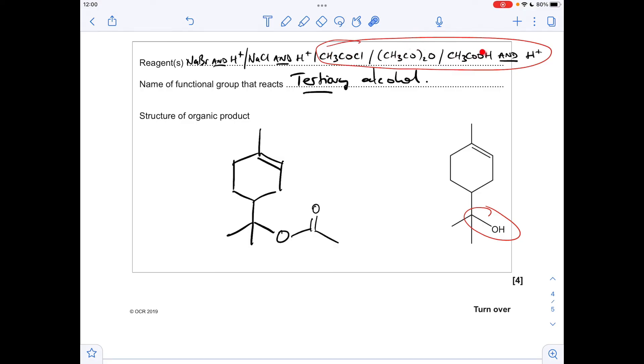Tertiary alcohols will also react with acyl chlorides, acid anhydrides, carboxylic acids, but only in the presence of an acid catalyst. And they all generate esters. And because I've gone for ethanoyl chloride, ethanoic anhydride, ethanoic acid, the ester product would be the same for those three examples. And the final thing to say is you can't react this with acidified potassium dichromate because you can't oxidise tertiary alcohols.